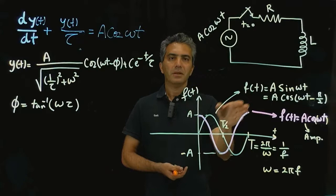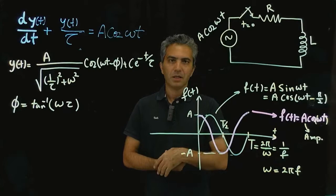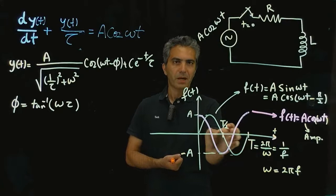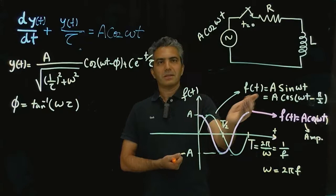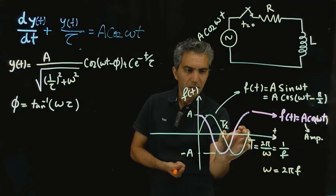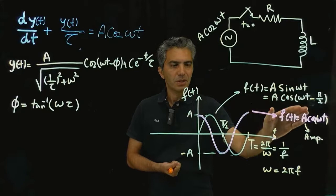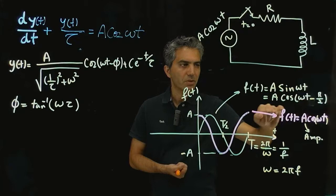Now we know what frequency and period are, and what the amplitude is. You can also take this same signal and shift it in the time domain — moving it forward or backward. Where your t = 0 is for the same kind of signal is arbitrary. For example, if I take this same signal and shift it forward by about pi over 2, everything we discussed is still true. That signal is A cosine(omega·t − pi/2), just shifted pi/2 forward.